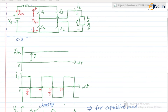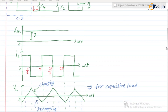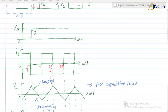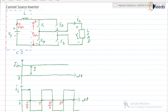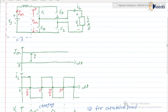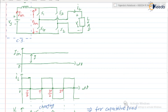The load may be a resistive load or a capacitive load. They have asked questions about capacitive load in some competitive examinations — what is the nature of the load voltage, that we are going to discuss. I_in is a constant current having a magnitude of capital I. When S1 and S2 are in the on state, suppose the load is resistive, then voltage across the load and current through the load will be in phase, so the waveforms for V_L and I_L will be in phase.